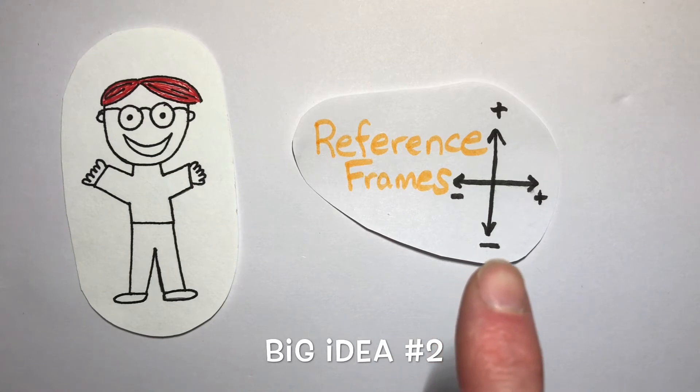If I'm looking at free fall, for example, where the entire problem involves going in a downwards direction, I might want to just make that positive. I firmly believe reference frames are an excellent tool to use in many problems that we explore. So consider them as big idea number two.